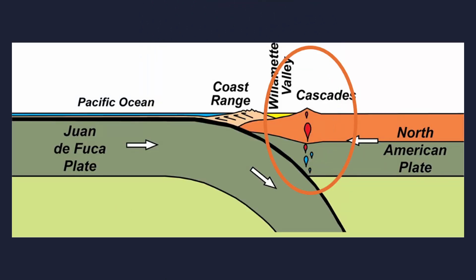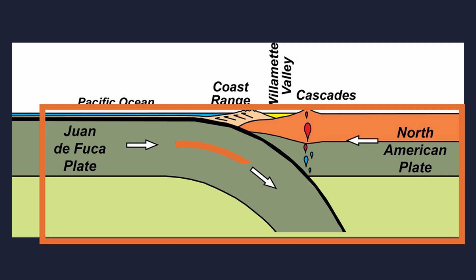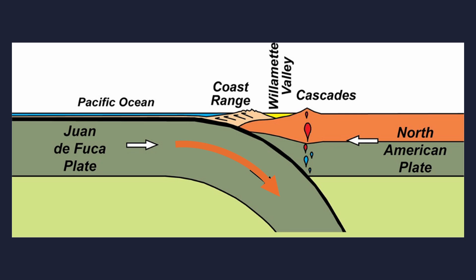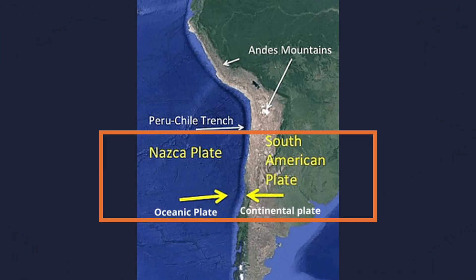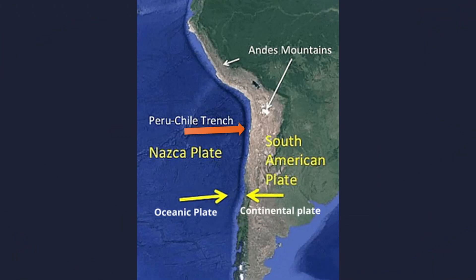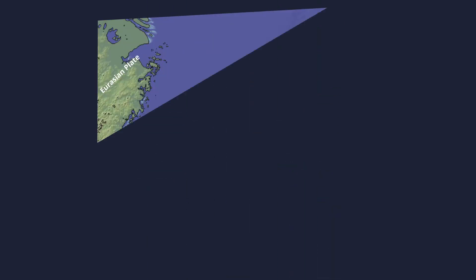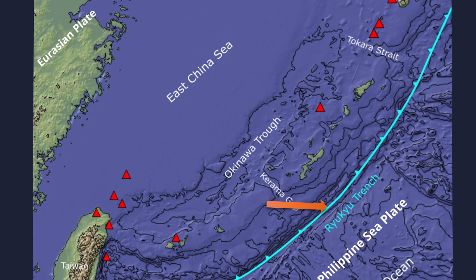At the point where the oceanic plate begins to descend, a deep oceanic trench is formed, marking the boundary between the converging continental and oceanic plates. The Peru-Chile Trench off the west coast of South America is formed by the oceanic crust of the Nazca plate subducting beneath the continental crust of the South American plate. The Ryukyu Trench stretching out from southern Japan is formed as the oceanic crust of the Philippine plate subducts beneath the continental crust of the Eurasian plate.